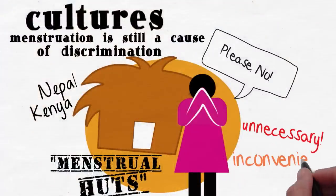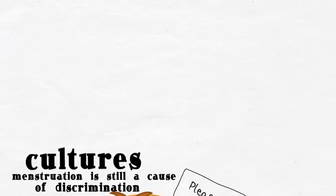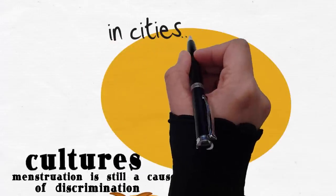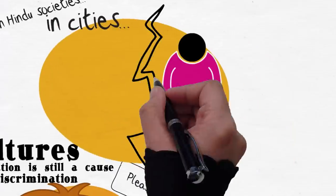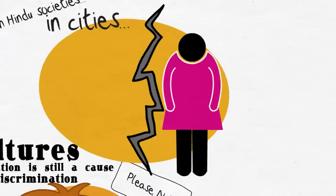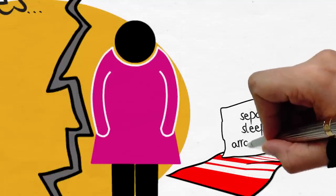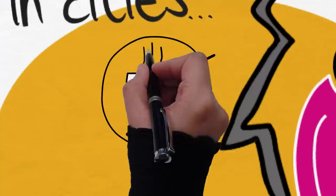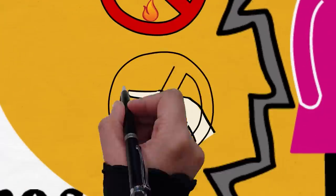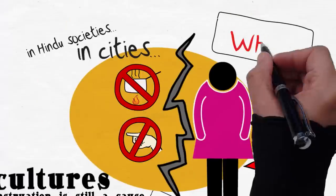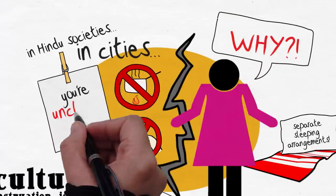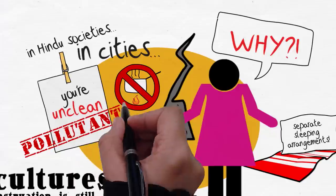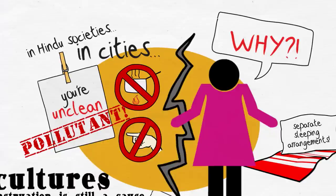This unnecessary and inconvenient practice is not found in villages alone, even in cities. In various Hindu societies, she is isolated from her husband and family during these days. They have a separate area for her to sleep. She is not allowed to cook, serve, or touch the drinking water, or even come in contact with other people's food. It is thought that everything a woman touches in this state would rot or become unclean and polluted.